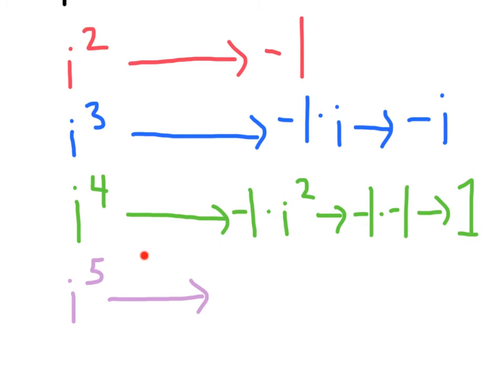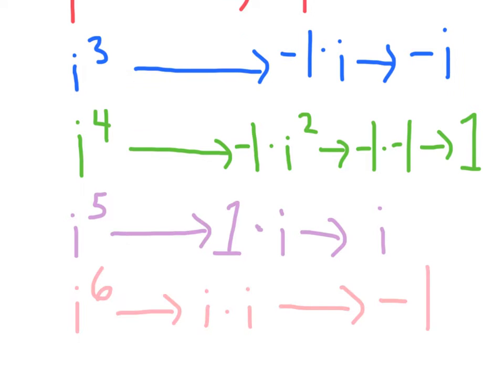How about adding another one, i to the 5th? That's going to give us 1 times i, which is just going to be i. i to the 6th, that's going to be i times i, which is negative 1. Ah, I'm sensing something here.